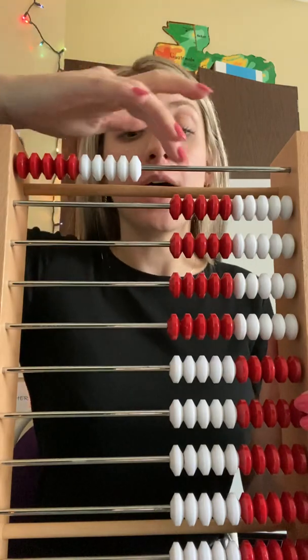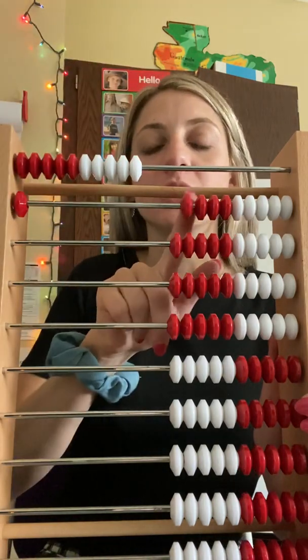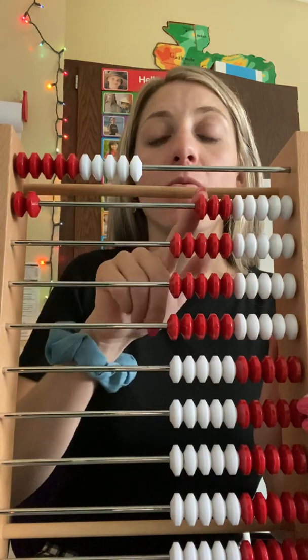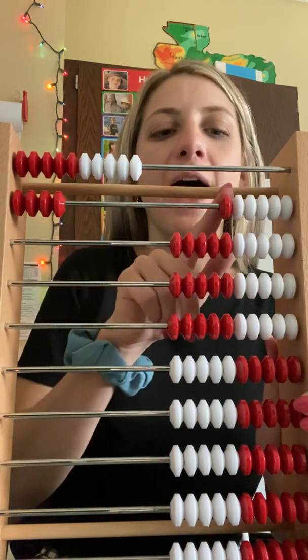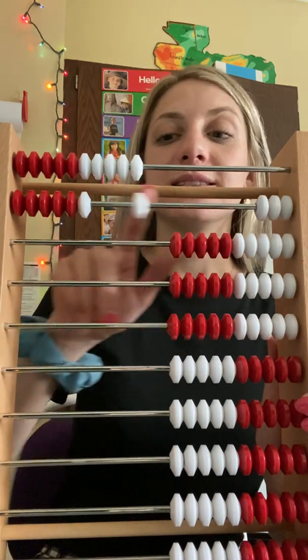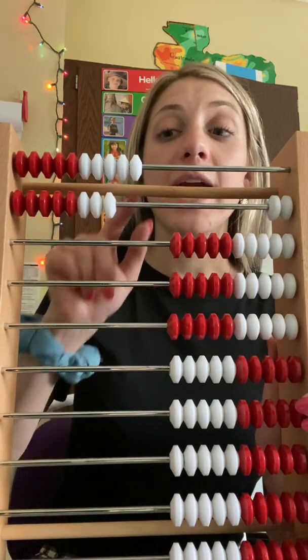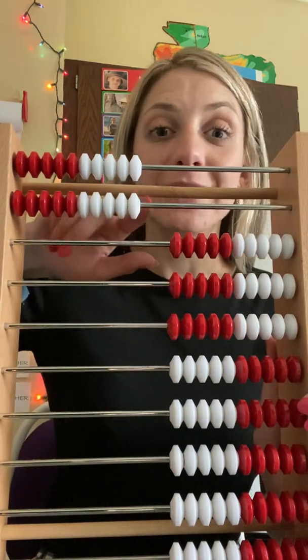So now when I count on, I'm going to say 10-1, 10-2, 10-3, 10-4. What do you think is next? 10-5, 10-6, 10-7, 10-8, 10-9, two 10s.